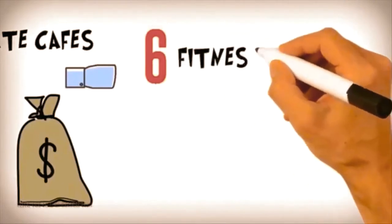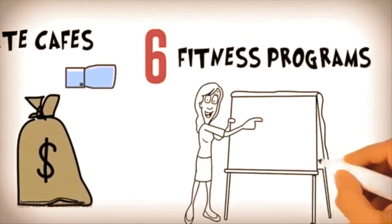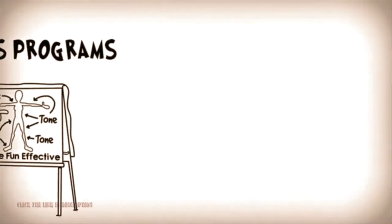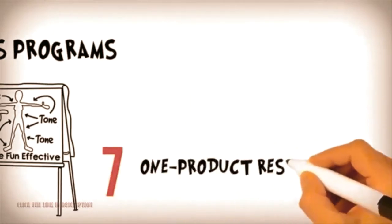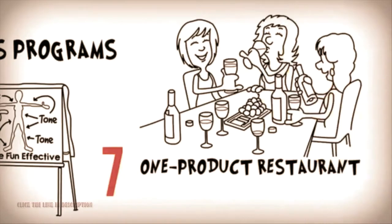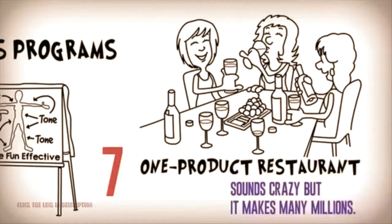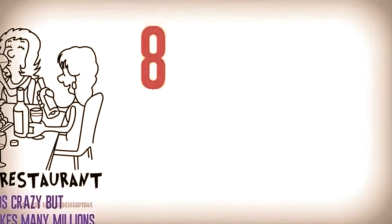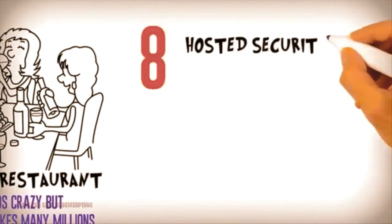Six: fitness programs by running fitness courses. Seven: one product restaurants. This capitalizes on one specific type of food and all you can do with it. Sounds crazy but it makes many millions. Eight: hosted security provider.